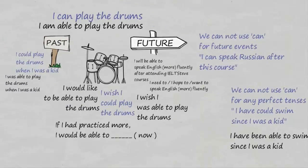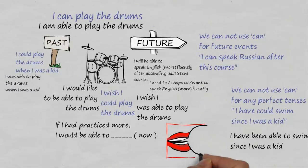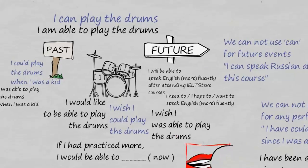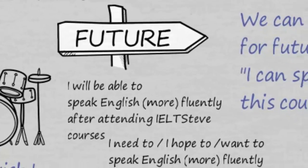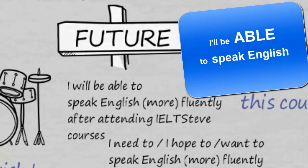In terms of pronunciation, let's have a look at these briefly. Able to is more complicated because there are more words, so you want to link them together. Looking at the first example: 'I'm able to play the drums' — the able is going to be stronger than the to and the am, so able is the strong sound. In the future: 'I'll be able to speak English more fluently after attending our Steve courses.' Notice the first few words connecting together: 'I'll be able to speak.'